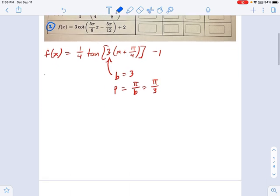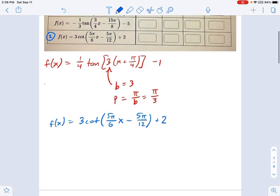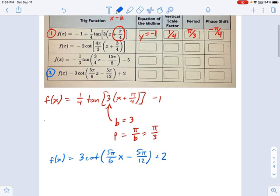So this example has f(x) equals 3 times the cotangent now, and then it just gives you this stuff. See, the inside of the parentheses is a little different from what we're used to. It doesn't have things broken out very clearly with what b is and what h is. So we're going to have to do some work untying that.